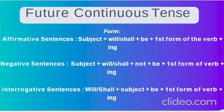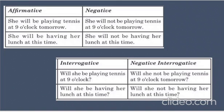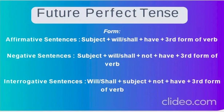Future Continuous Tense is something in the future that will be continuing. Affirmative: Subject + will/shall + be + V1+ing. Negative: Subject + will/shall + not + be + V1+ing. Interrogative: will/shall + subject + be + V1+ing. Example: 'She will be playing tennis at nine o'clock tomorrow,' 'She will not be playing tennis,' 'Will she be playing tennis at nine o'clock tomorrow?' 'Will she not be playing tennis at nine o'clock tomorrow?'